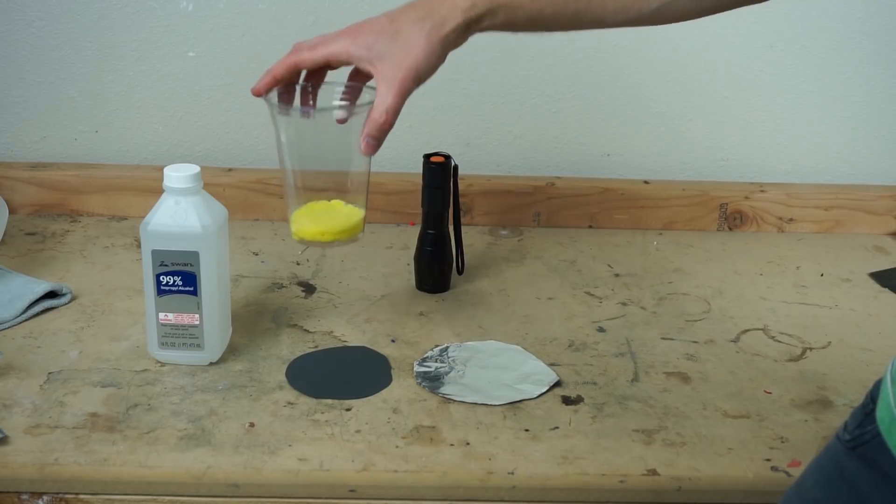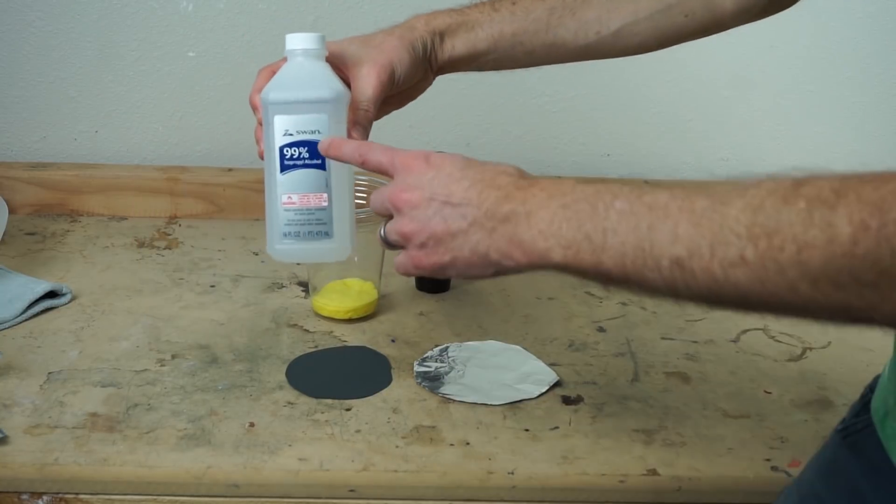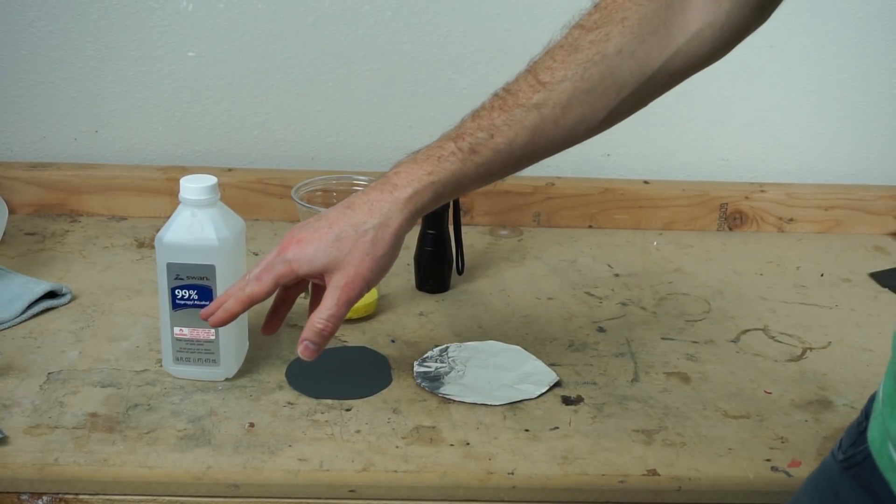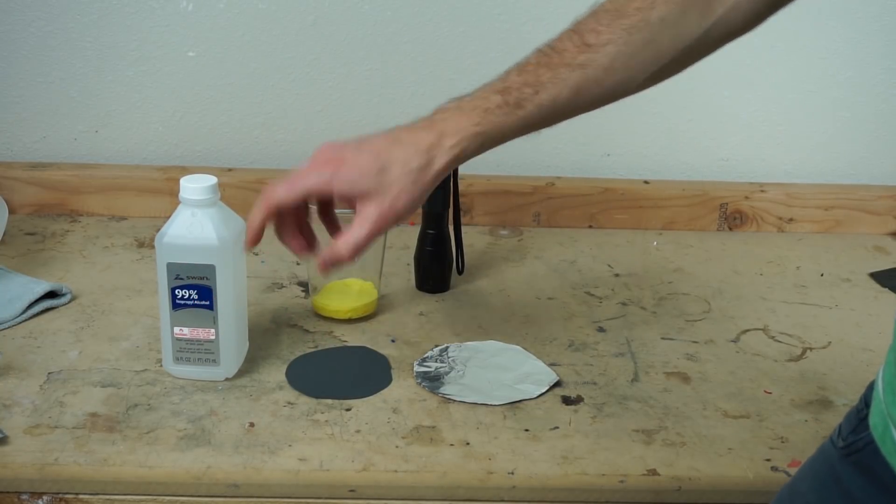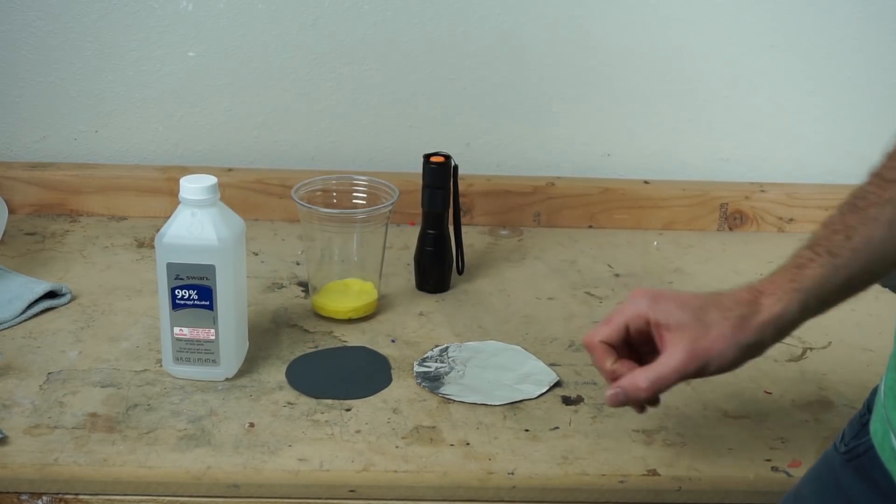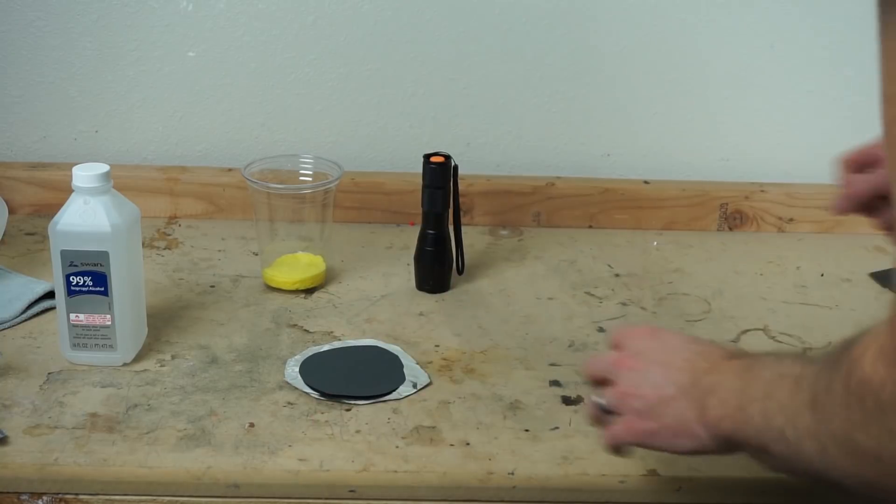You soak it in your isopropyl alcohol, and I'm using 99% isopropyl alcohol. Usually the kind that you get in the store is around 70%, but it works better the higher percentage you have. So this is almost pure alcohol and then all you do is tape your black paper on the bottom.